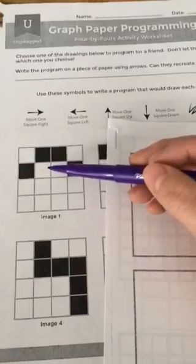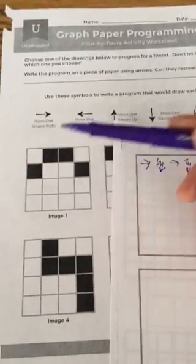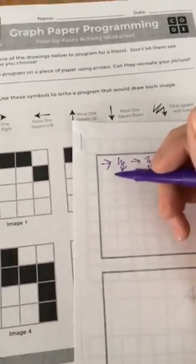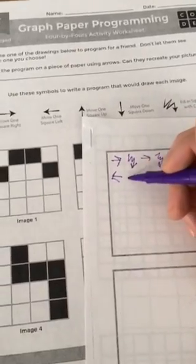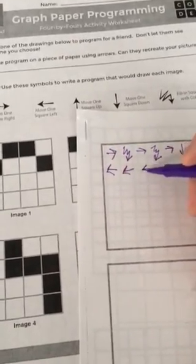I need to go left one, two, three times. That looks like left one, two, three times. Then I will color that in. Excellent. This is the code that I will give to my partner.